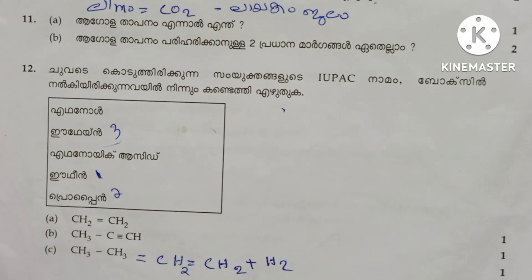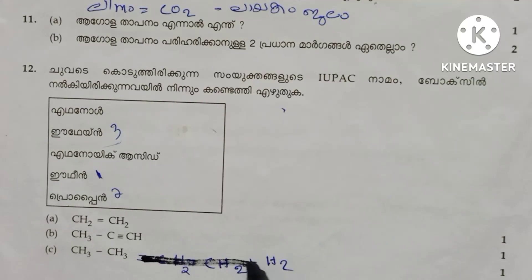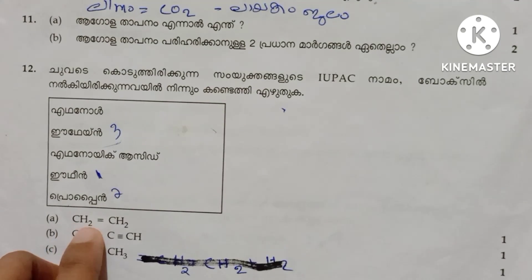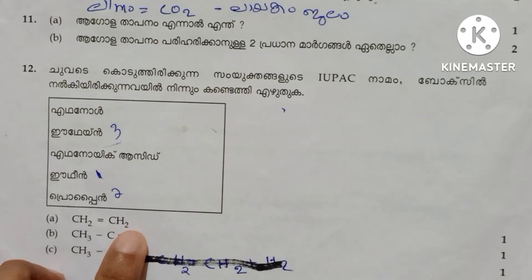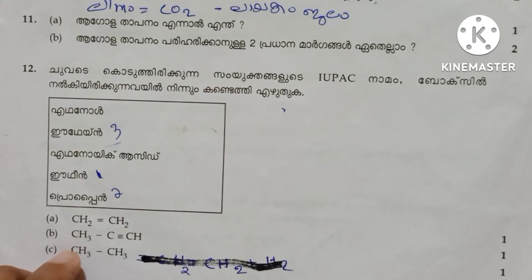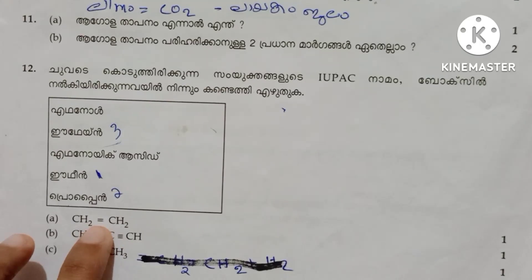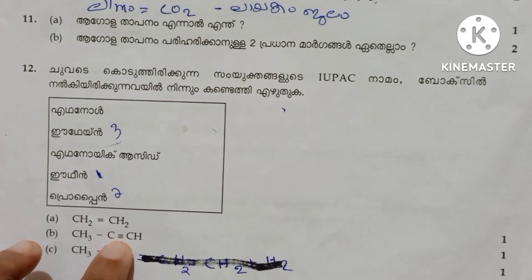Now 3 questions: A, B, C. What is this? CH2 double bond CH2. That is double bond CH2. Now CH3 single bond C triple bond CH. One is single bond, two is double bond, three is triple bond.